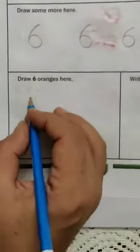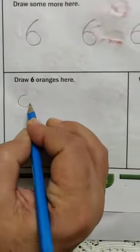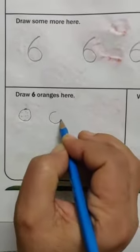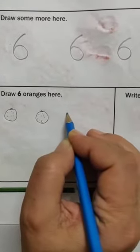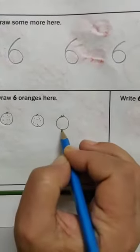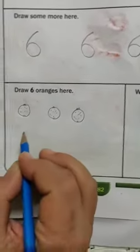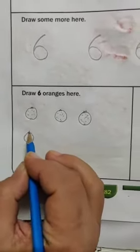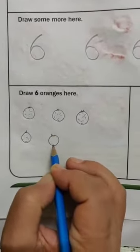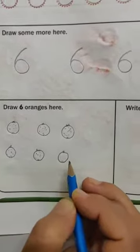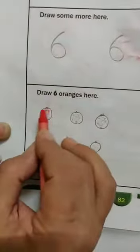Here we will draw orange. How many orange? 6 orange. 6. Very easy. You have to make circle and some dots. And now we will color these oranges like this. 6.